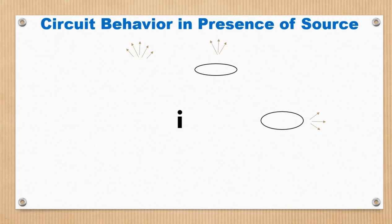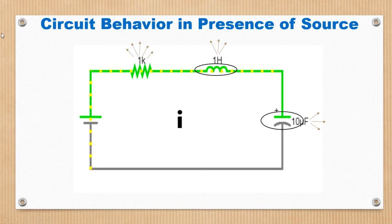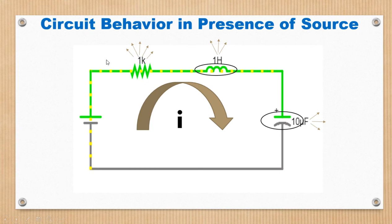Now, how do all these different components behave in the circuitry? In presence of source, the voltage source feeds an equal amount of current through all the RLCs, and the direction of current is as shown. In presence of source, the resistor dissipates energy. The inductor will also dissipate energy but stores some amount. The capacitor similarly dissipates energy but stores some amount, because L and C have the capability to store energy.